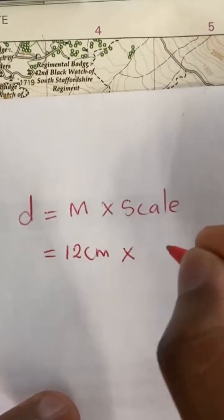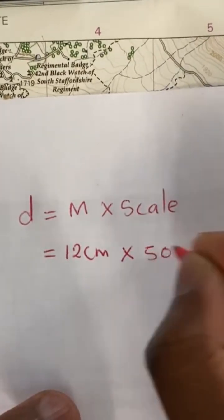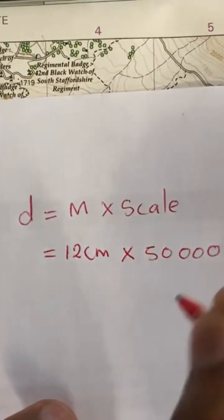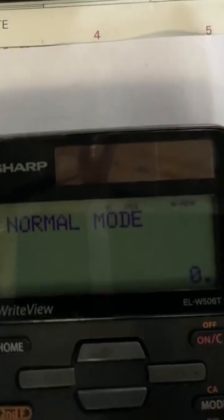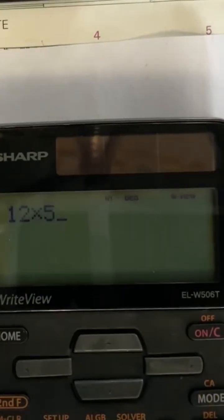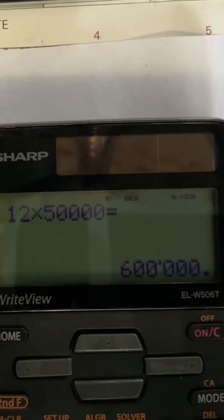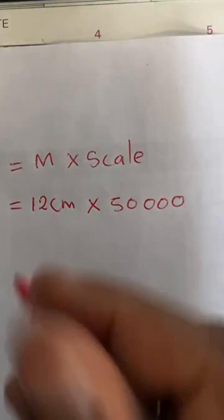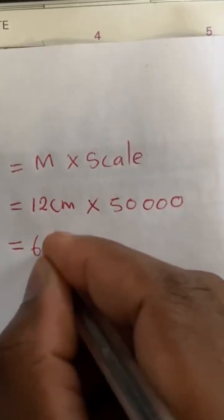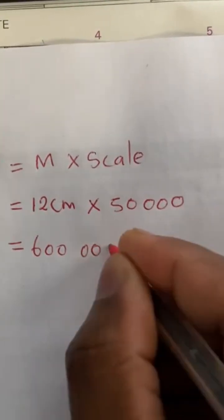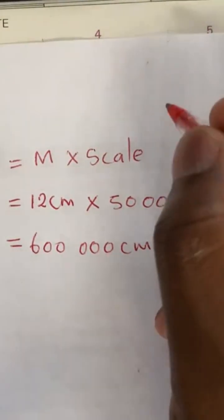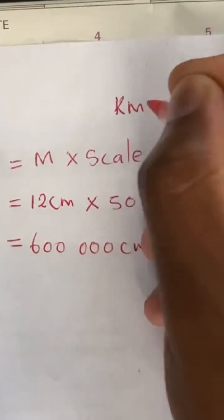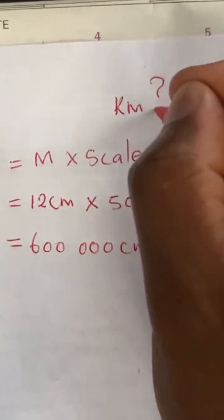I'm going to multiply by the scale of the map, which is 50,000. Using my calculator: 12 times 50,000 is 600,000. So the answer is 600,000 centimeters. But remember, the question was to calculate the distance of the road in [kilometers/meters].